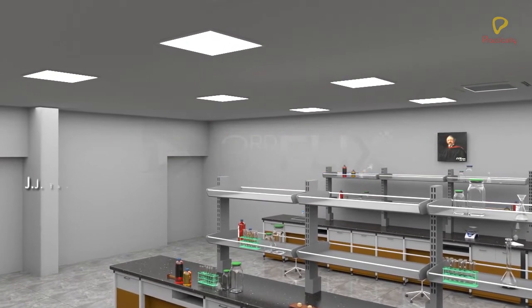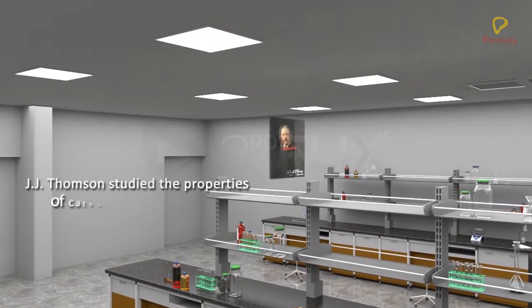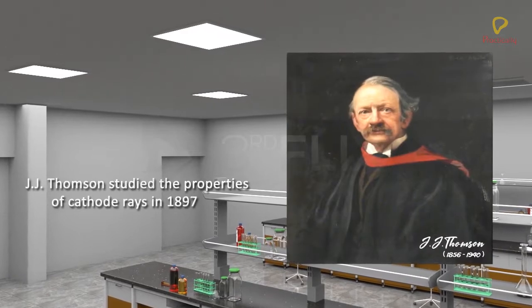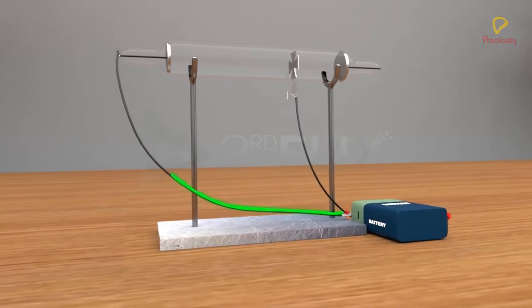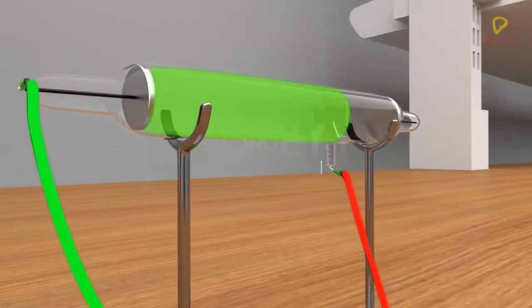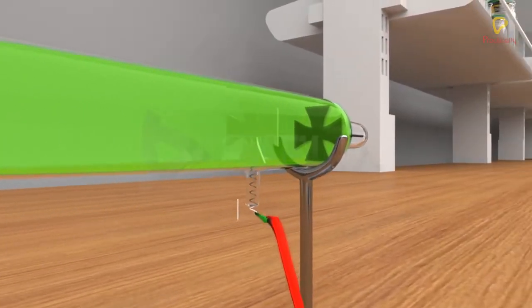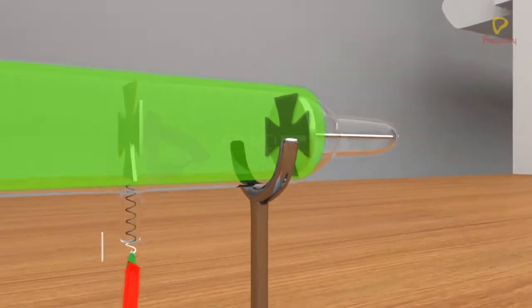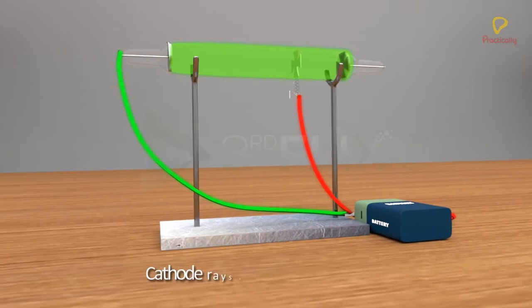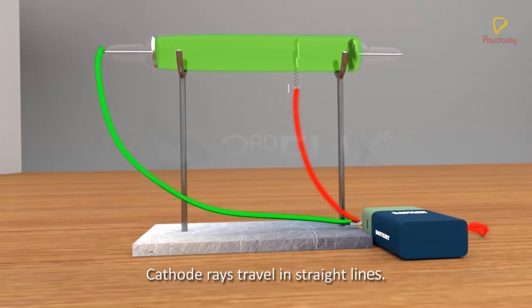JJ Thompson in 1897 studied the properties of these cathode rays through a series of experiments. He observed that when an opaque object is placed in the path of cathode rays, a sharp shadow was formed. This led him to conclude that cathode rays travel in a straight line.